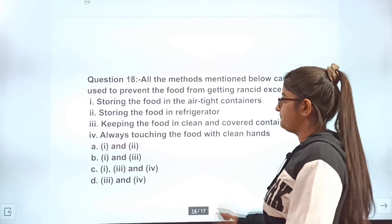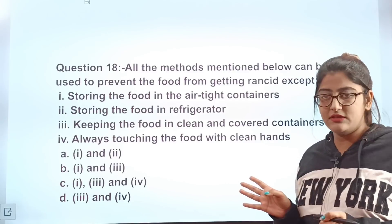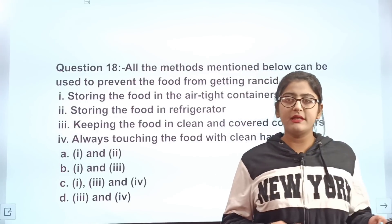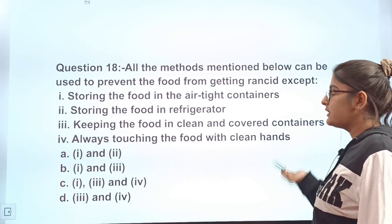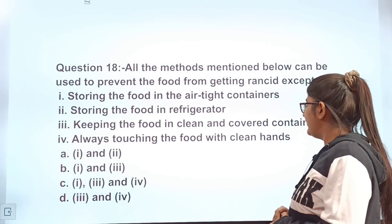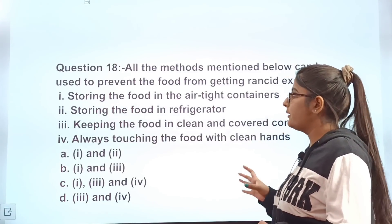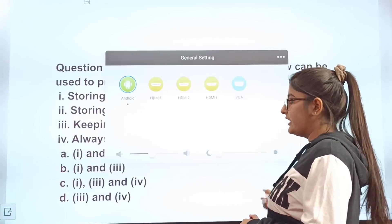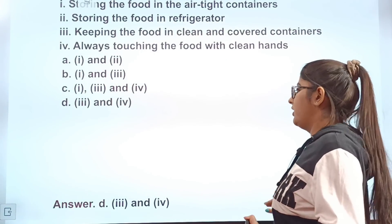Question 18: All the methods mentioned below can be used to prevent food from getting rancid, except — storing food in airtight containers, storing food in a refrigerator, keeping food in a clean and covered container, and always touching food with clean hands. The third and fourth methods will not help prevent rancidity, so the correct answer is D.